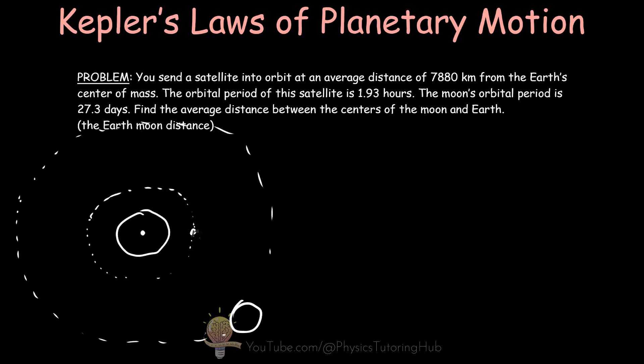So this here is our satellite. And this is the Moon. This is the Earth. We already have the average distance of this satellite here. And we'll call this R1. We're trying to work out the average distance between the center of the Moon's mass and the center of the Earth's mass. We'll call that R2.